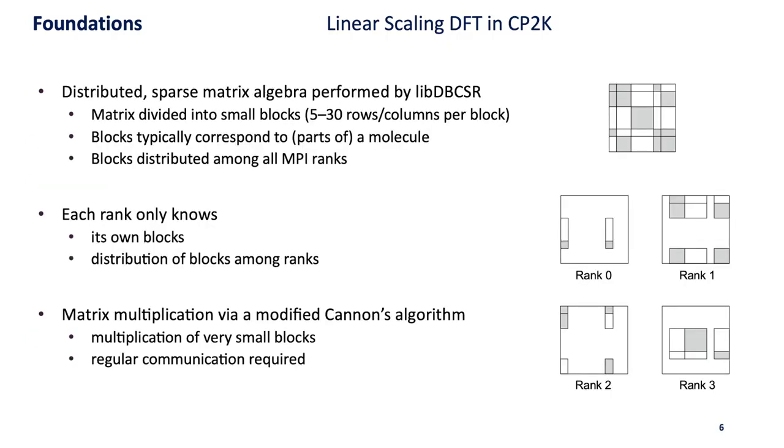One important part of CP2K is the LIBDBCSR library which is used to do the multiplications. We have a sparse Hamilton matrix and in CP2K this is represented as a block sparse matrix. The matrix is divided into relatively small blocks, maybe 5 to 30 rows and columns per block, and the sparsity pattern is only utilized on top of these blocks.